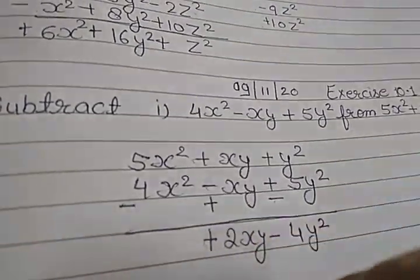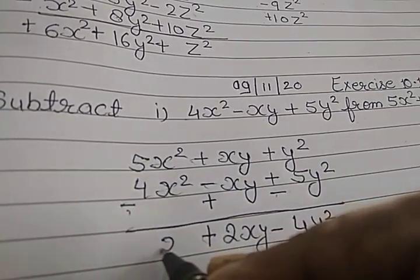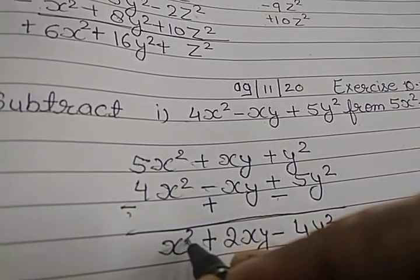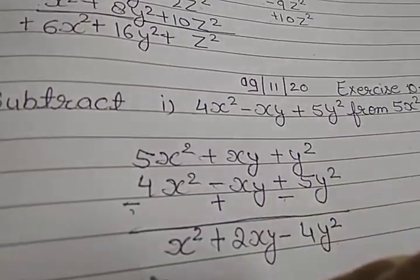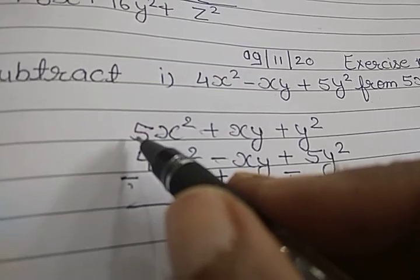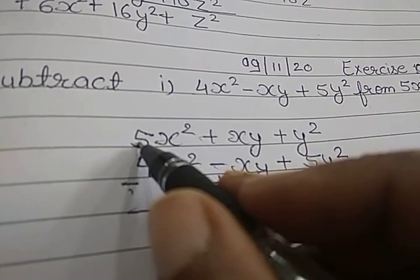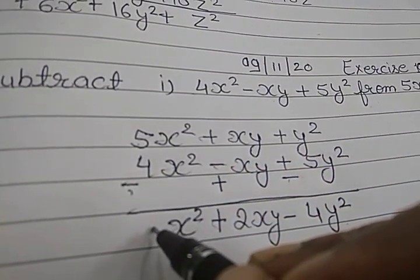Plus minus minus: 5 minus 4, 1 will be remaining, so we will write here x² because 1 we are not using with the variable. Now you compare the signs, plus minus, which one is greater? This 5 is greater, so we will write here plus.